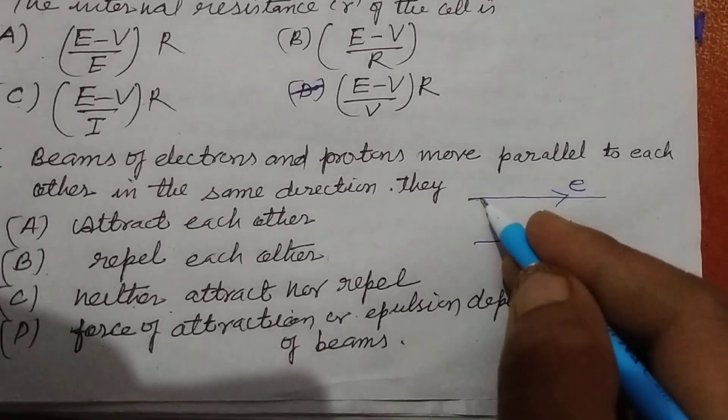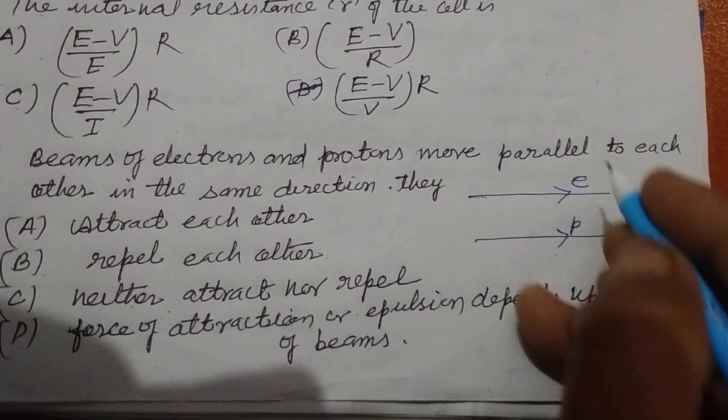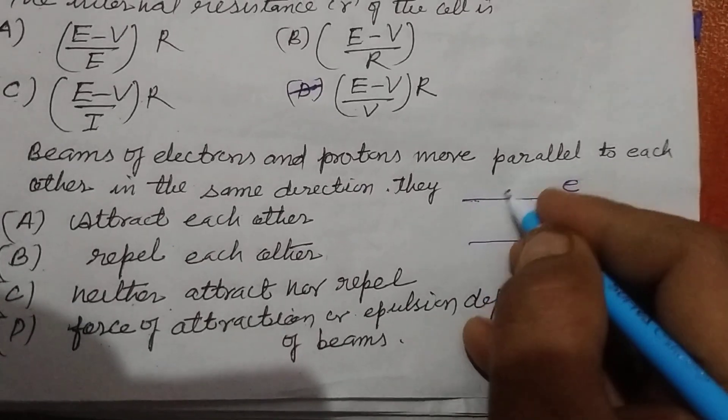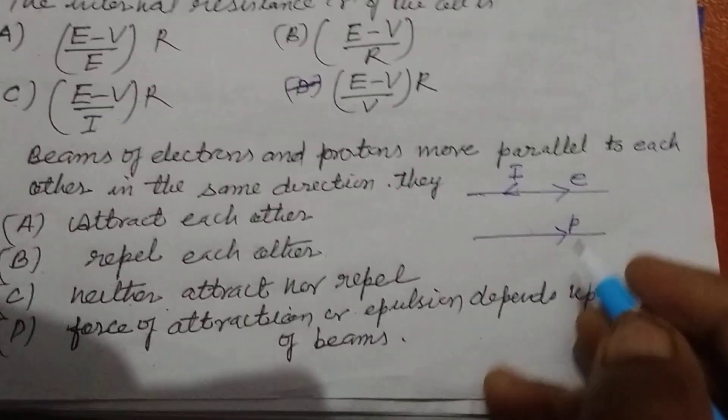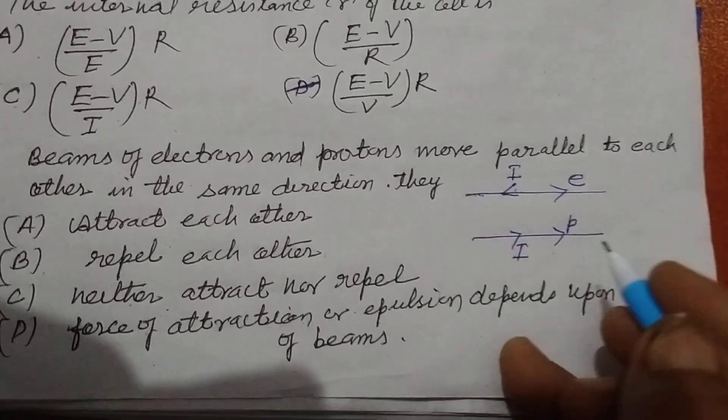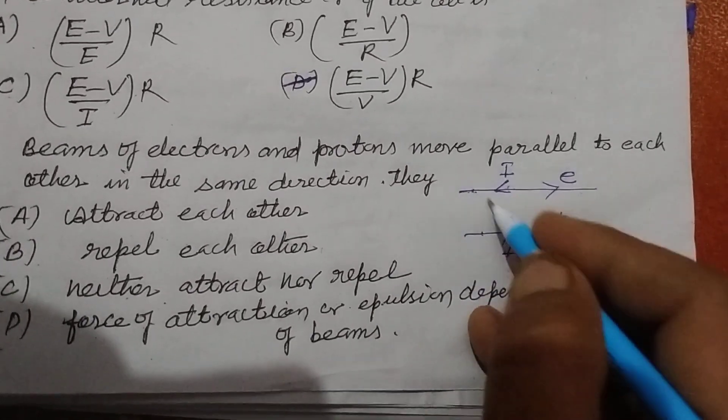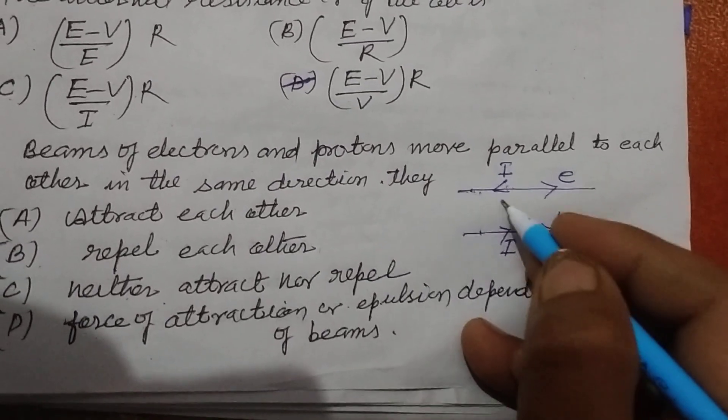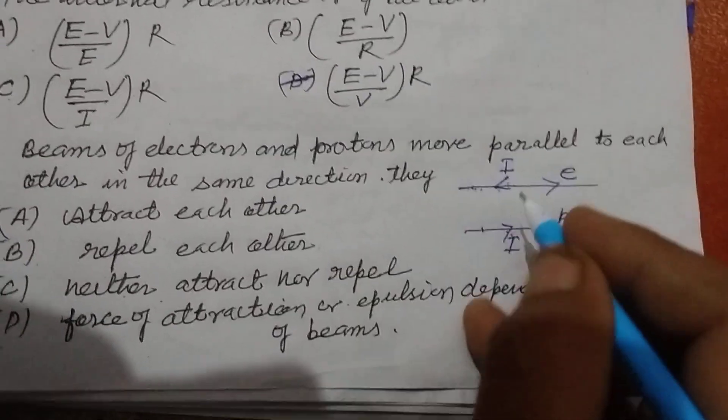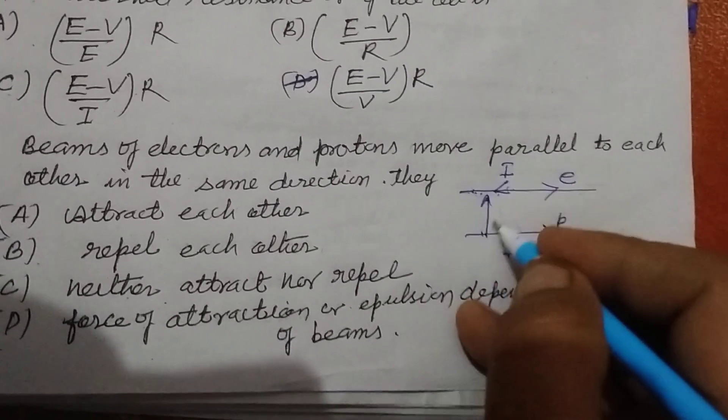Since you know that when current flows, electron flows in opposite direction. So if electron is flowing in this direction, the current is flowing in this direction, opposite direction. Proton flows in this direction, current also flowing in the same direction. Now these are two wires which have different direction of current, so they repel each other.